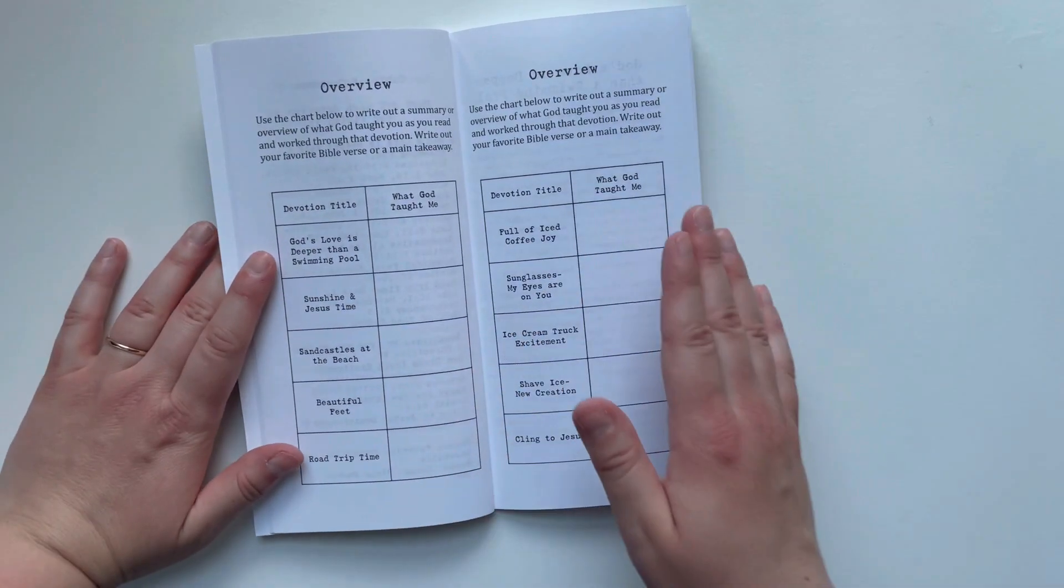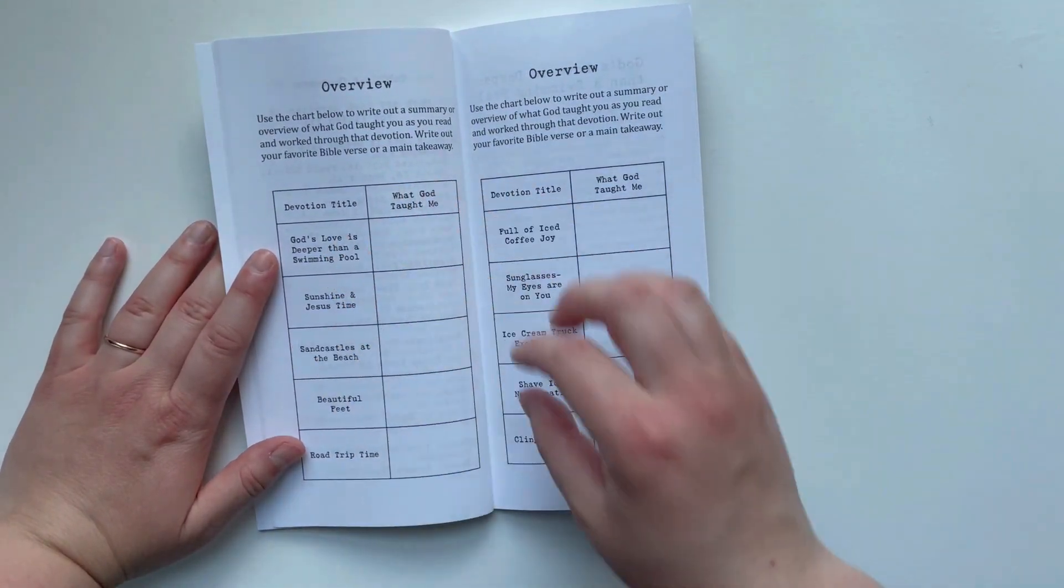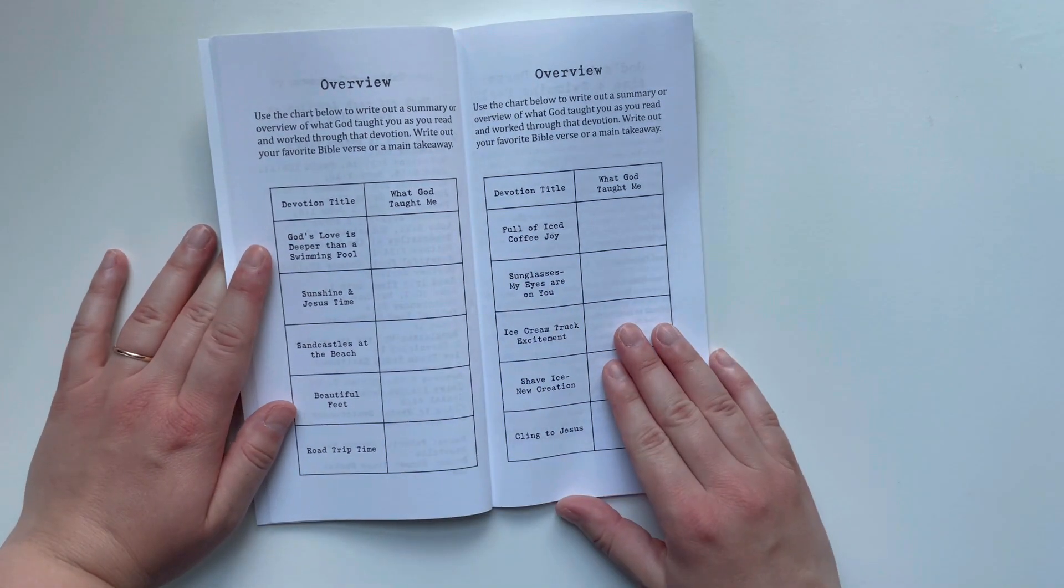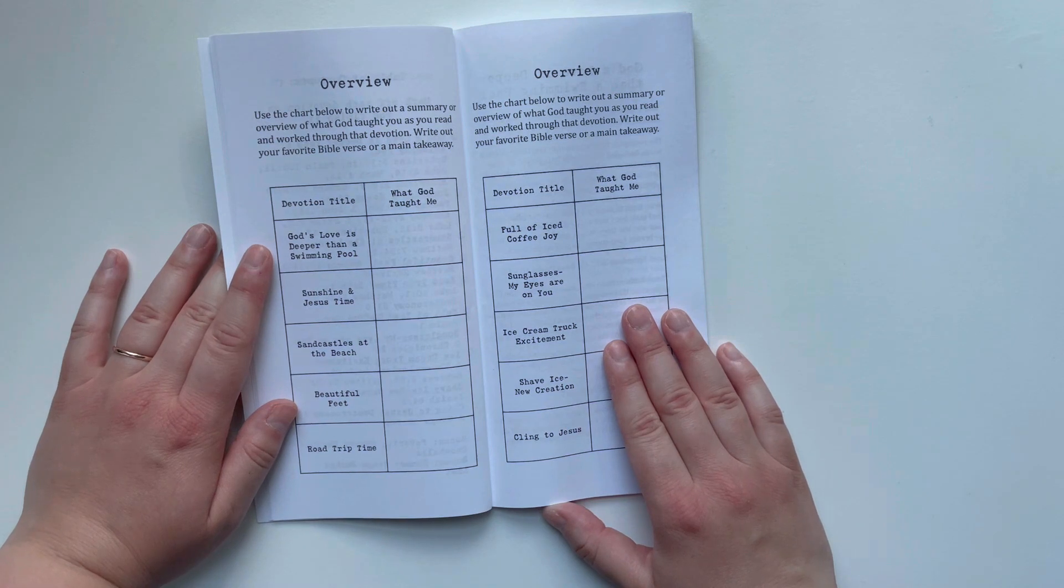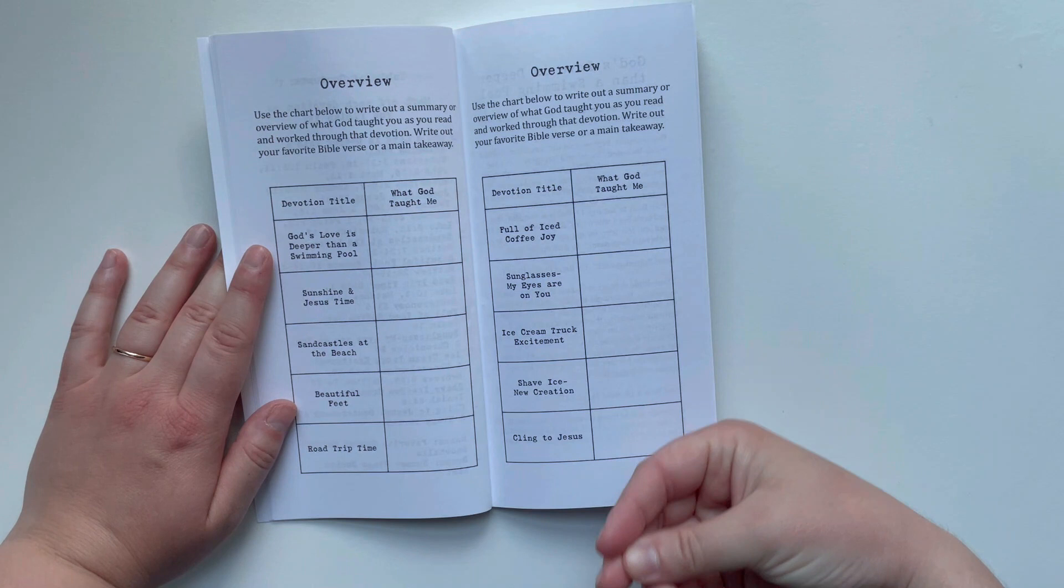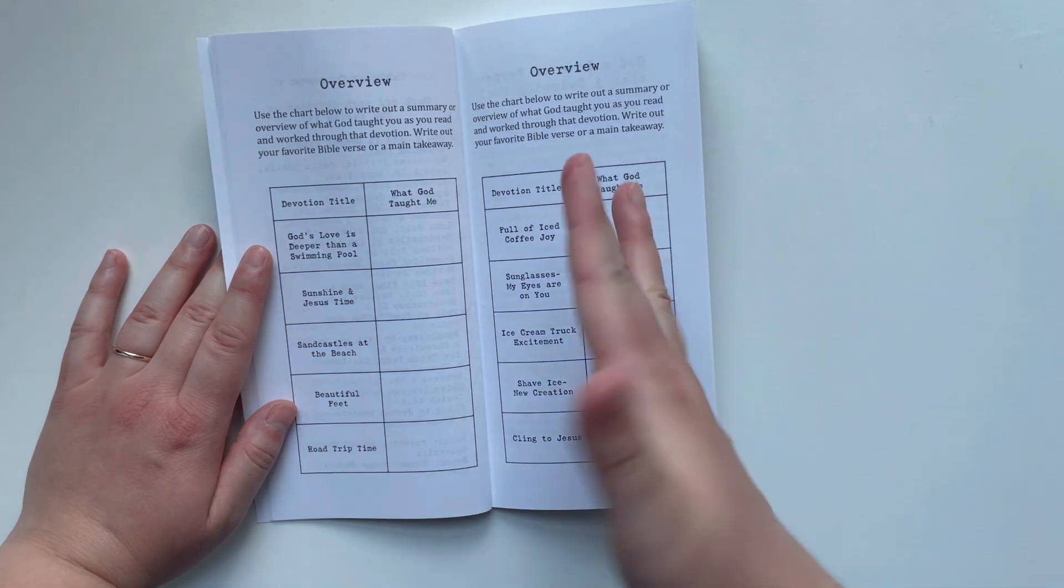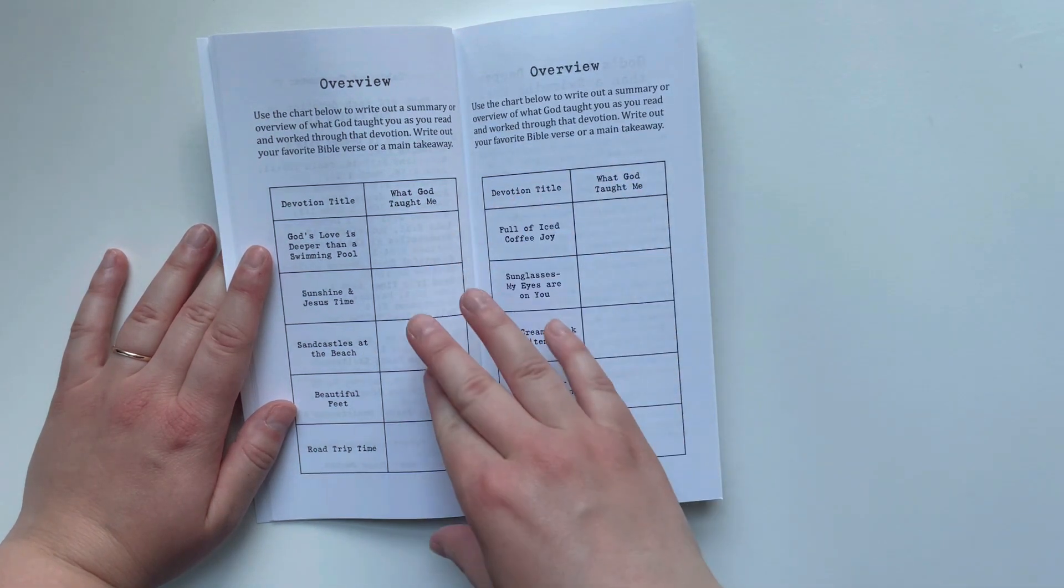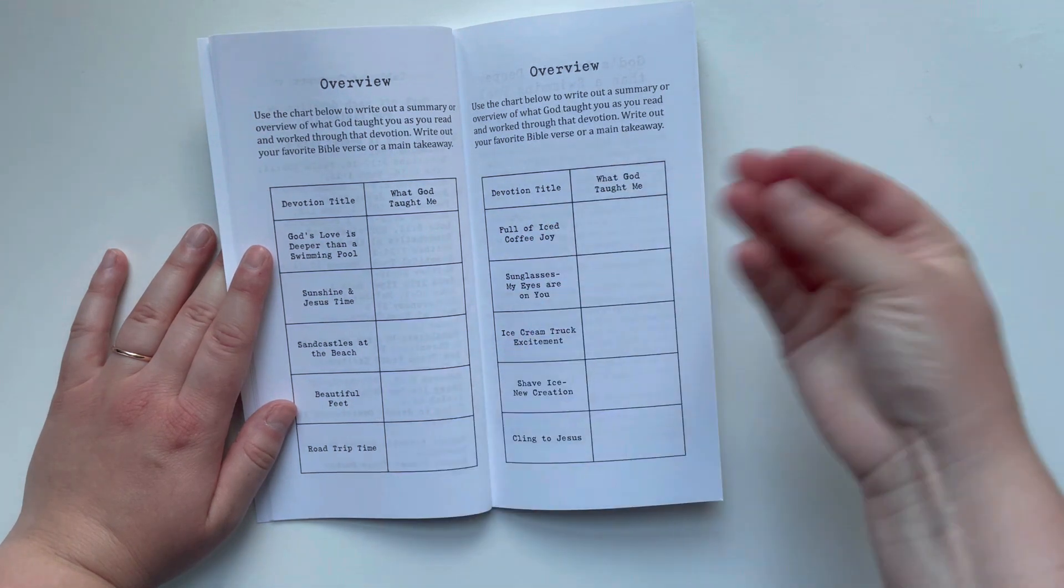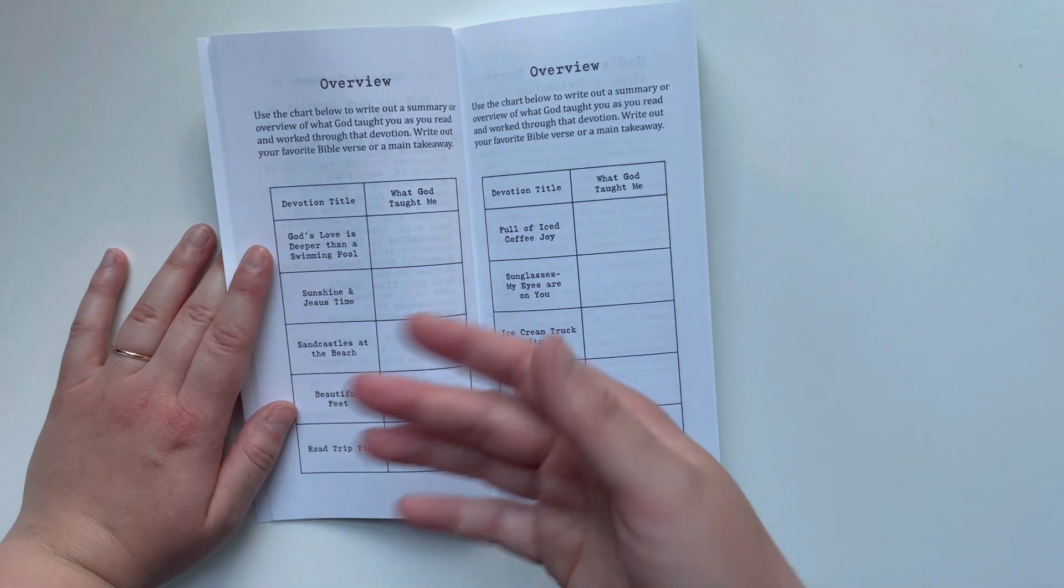And then there is this great little overview page. You can write down a main theme or takeaway from each of the 10 devotions, and it's really awesome. I'm a very visual learner, and so it's really great to take these images from summer and connect them with themes in the Bible because it helps us remember more.